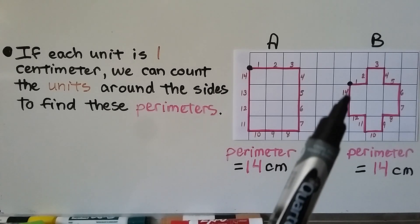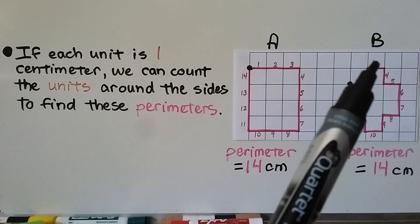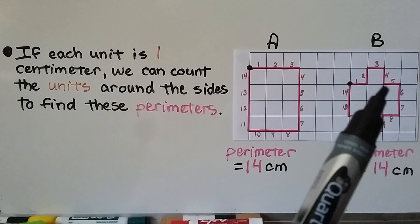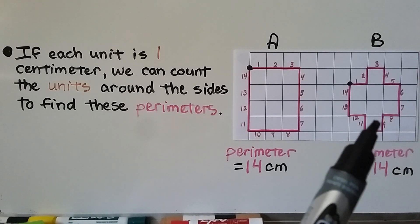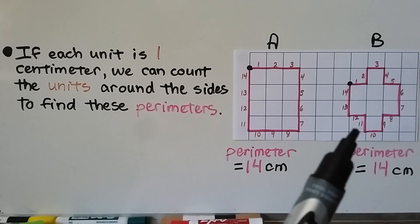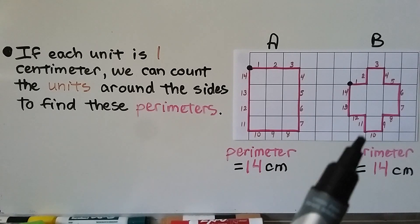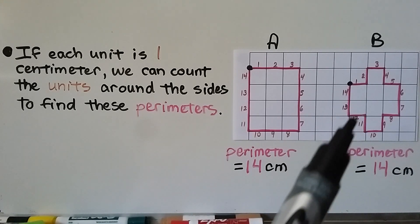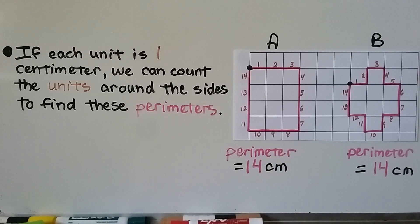For this one, starting here: 1, 2, 3, 4, 5, 6, 7, 8, 9, 10, 11, 12, 13, 14. Notice when it went in on the corner, I counted that side and then the one right up here. So the perimeter for this shape is also 14 centimeters. They look different and yet they have the same perimeter.